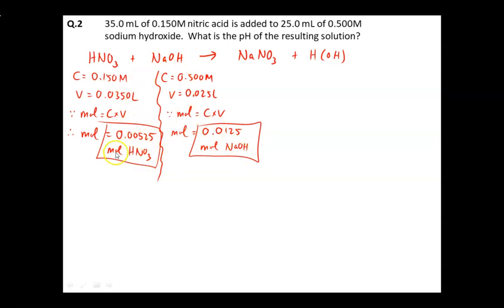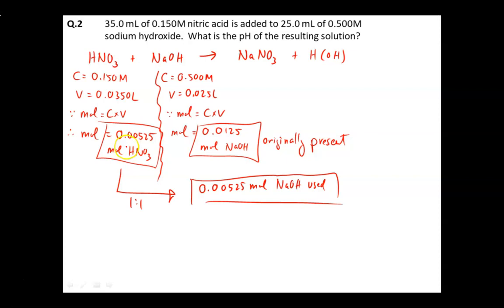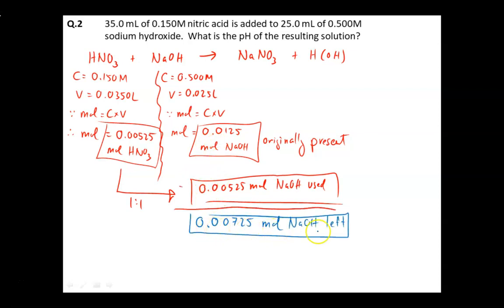Because it's a 1-to-1 ratio, we can already predict just by looking at the two values that HNO₃ is the limiting reagent. You can confirm it the long way by converting both to moles of water or sodium nitrate — just make sure you compare apples to apples. Once confirmed, HNO₃ runs out first, so there will be excess sodium hydroxide. Using a 1-to-1 ratio from HNO₃ to NaOH, 0.00525 moles of NaOH was consumed. Subtracting from the original 0.0125 moles gives 0.00725 moles of sodium hydroxide remaining in excess.